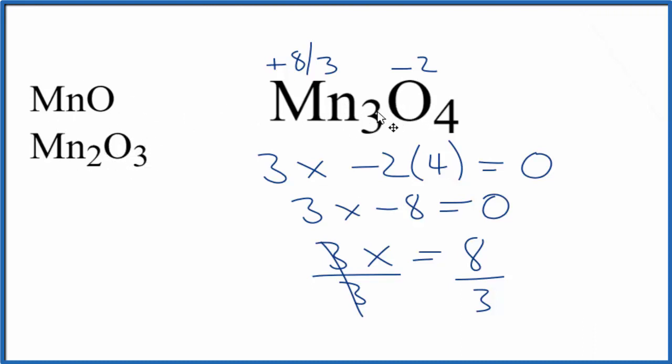So for Mn3O4, things like Fe3O4 or Pb3O4, we will have a fractional oxidation state when we do the average. But that's because they're composed of these compounds here.